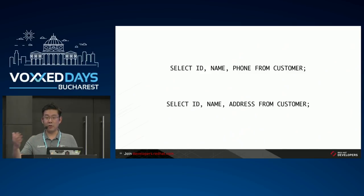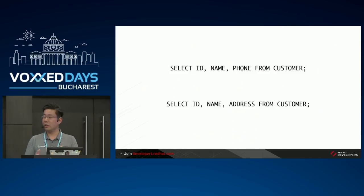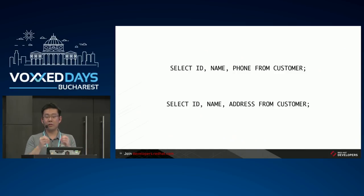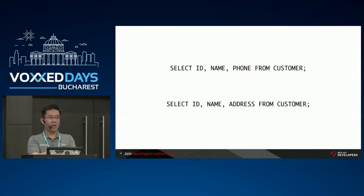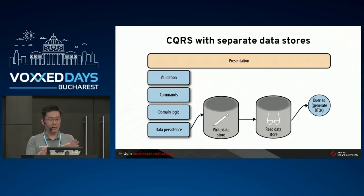Another day somebody comes with another requirement - a different report with different fields. You create a select with ID, name, address from customer, create another DTO, generate your other report, solve the problem. But then you realize you're not constrained to having a single source of information. You might have separate data stores for writing and reading. This is by far the most popular architecture in the distributed data world - CQRS architectures with separate read and write stores.